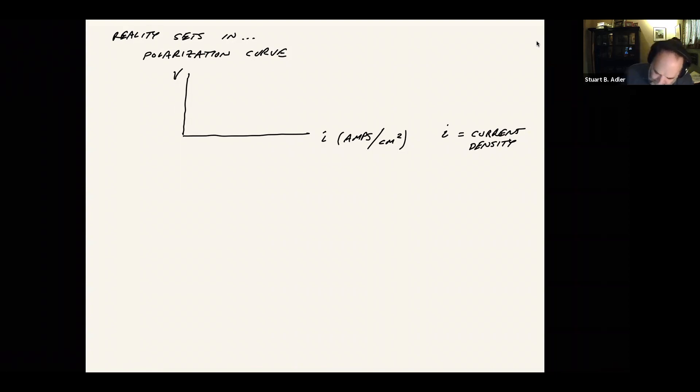And then we think about what the cell is doing. So zero current, that's where we expect to see the equilibrium voltage. So this point right here, this is V equilibrium.